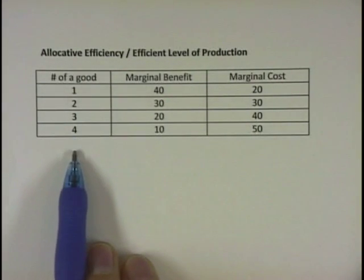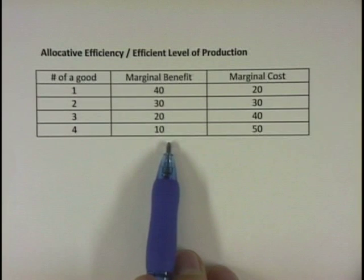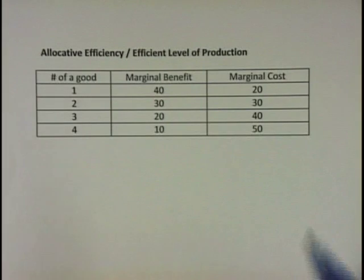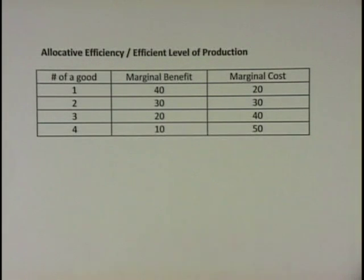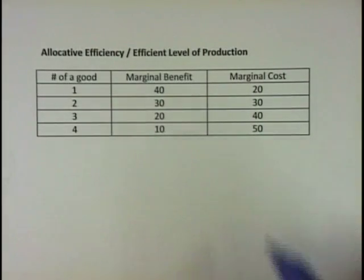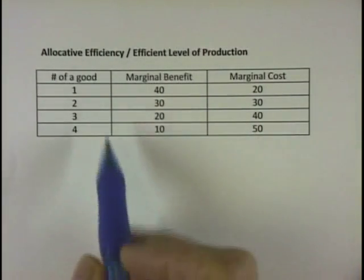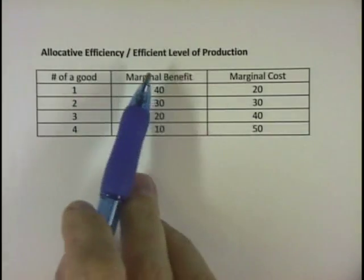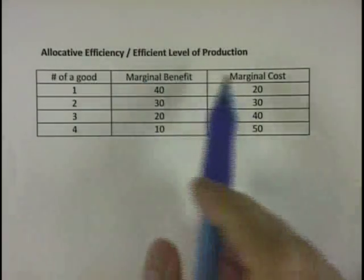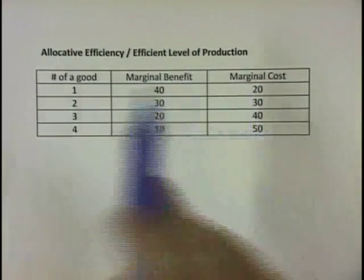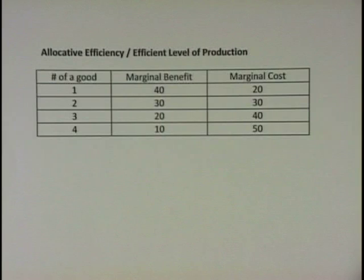We have how much of a good we have, and then marginal benefit is going to be decreasing because of the principle of diminishing marginal benefit, which says the more and more I consume of something, the less and less additional benefit I'm going to get from it. And marginal cost is going to be increasing.